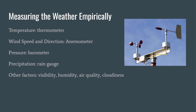The anemometer has the little spoon cups you can see here. For wind direction we use the wind vane. For pressure we use a barometer, and for precipitation the instrument is called a rain gauge — basically a tube with millimeter readings for rain.